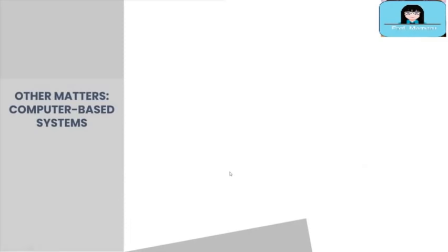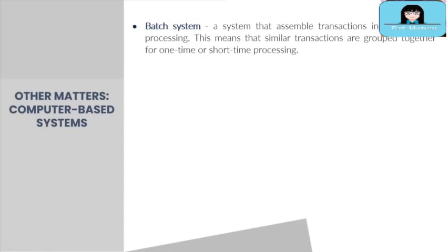Our final topics for this module cover other matters under computer-based systems. We have the batch system, which assembles transactions into groups for processing — similar transactions are grouped together for one-time or short-time processing. For example, in payroll processing, there are payroll software that allow users to process payroll by batch using position level: the payroll clerk can first process payroll of top management, then managers and supervisors, and finally operations personnel.